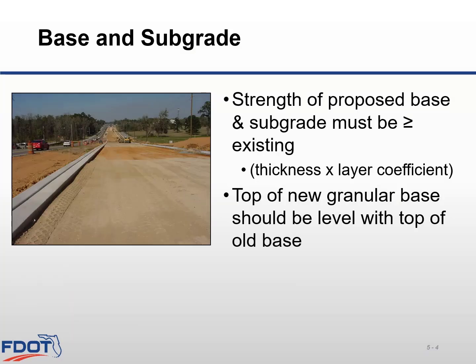The strength of the widened section base material needs to match or exceed the existing base strength. The strength is calculated by multiplying the thickness of the base times its layer coefficient. You'll need to visualize what's left when future milling occurs to ensure that the remaining structural numbers are compatible. Normally, the top of the new base and the top of the old base should match to facilitate future milling. From the top of the existing base down, the widening structural number must be equal to or greater than the existing structural number, including any stabilized subgrade.